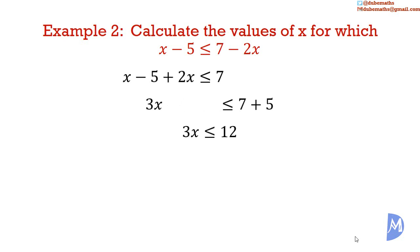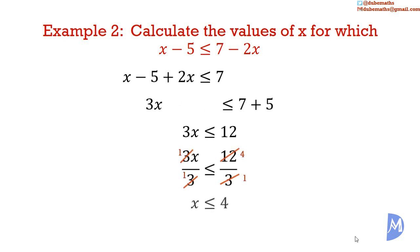We want x alone on the left-hand side, so we divide both sides by 3. The 3's cancel: 3 into 3 is 1, and 3 into 12 is 4. Therefore, x is less than or equal to 4.